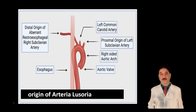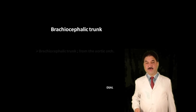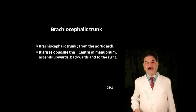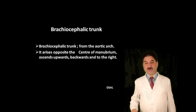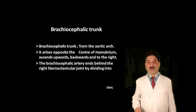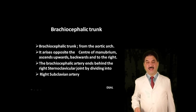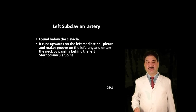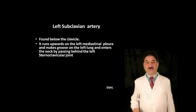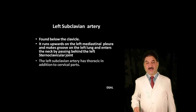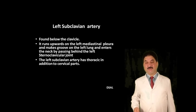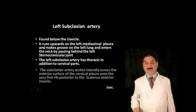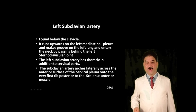What are the branches of the brachiocephalic trunk? The brachiocephalic trunk arises from the arch of aorta opposite the center of the manubrium and runs upwards and to the right. It ends behind the right sternoclavicular joint by dividing into the right subclavian and right common carotid arteries. The left subclavian artery runs upward from the mediastinum, makes a groove on the left lung, and enters the neck by passing behind the left sternoclavicular joint. It has both thoracic and cervical parts, arching laterally across the anterior surface of the cervical pleura onto the first rib, posterior to the scalenus muscle.